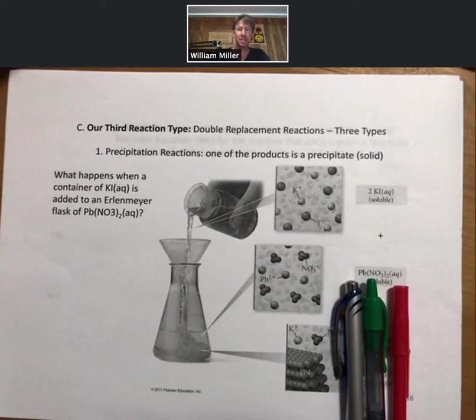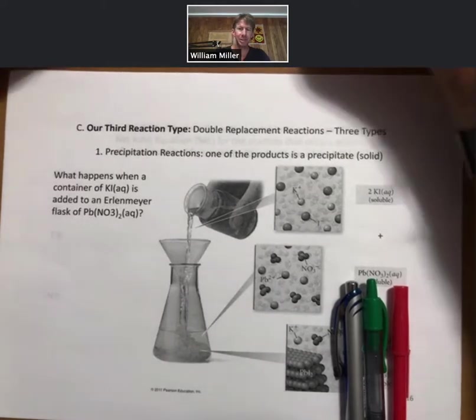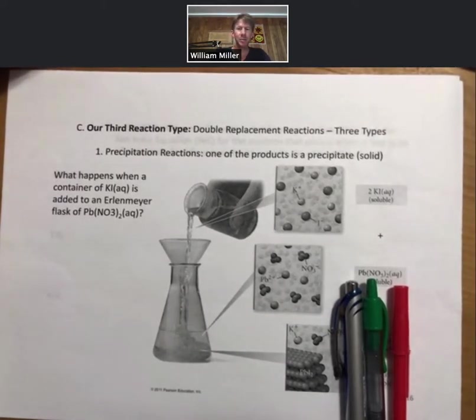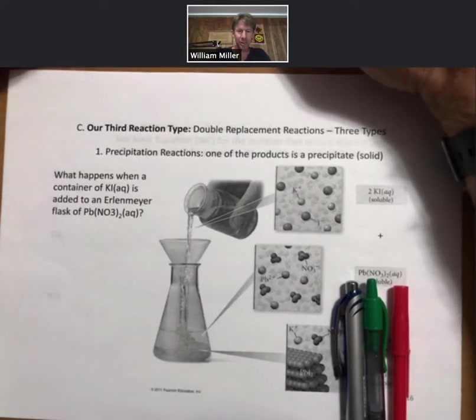The first subtype of this is going to be called a precipitation reaction. And one of the products is a precipitate, a solid. And so the first example we want to do is to talk about what happens when a container of potassium iodide is added to an Erlenmeyer flask of lead nitrate. And in fact, we're going to be doing it slightly differently. We're going to add lead nitrate in the video that I'm showing here.